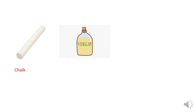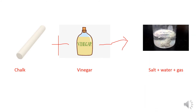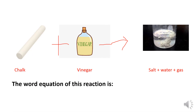Let's apply this to our example. The reactants are chalk and vinegar, so we write chalk plus vinegar. Then an arrow to express 'produces', followed by salt, water, and gas. The word equation for this reaction is: chalk plus vinegar produces salt, water, and gas.